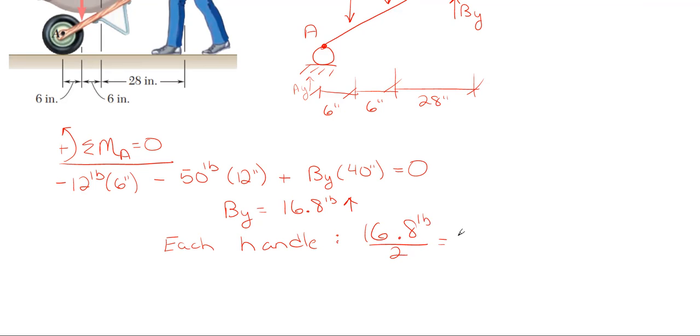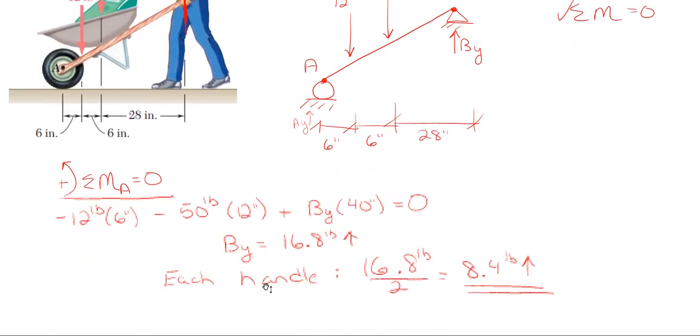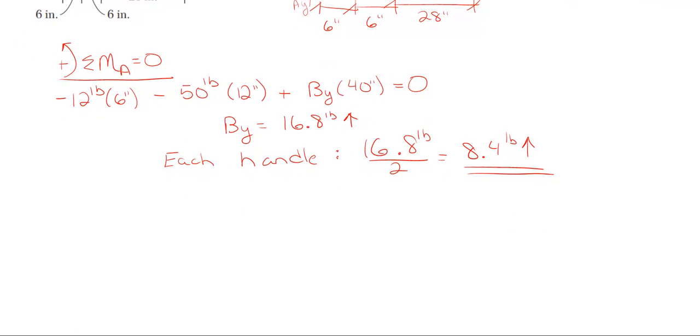Each handle will be 16.8 pounds over 2, which gives me 8.4 pounds in the upward direction on each handle. That's my final answer. It's interesting that with this wheelbarrow and these distances, you can lift a 50-pound bag only exerting 8.4 pounds with each hand. That's how you're able to lift so much more with a wheelbarrow.